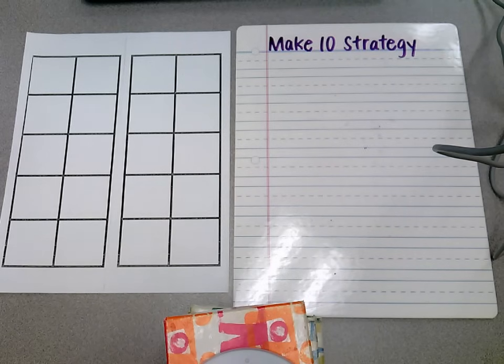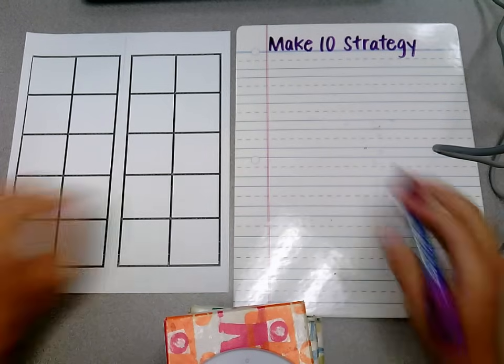The Make 10 strategy is a way for kids to do math quicker in their head, and while it seems a bit tedious right now, it is a great strategy for kids to have as problems get harder.